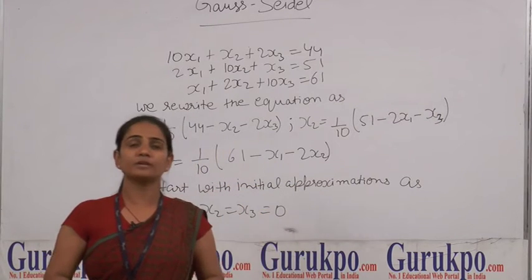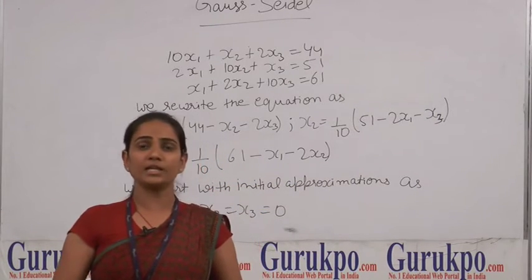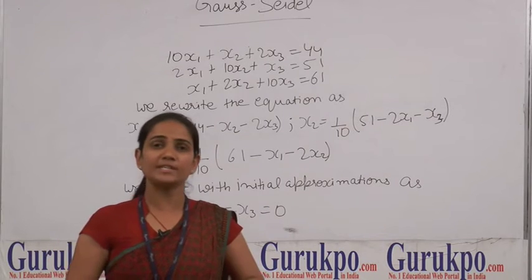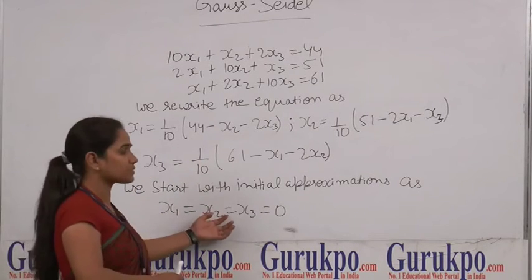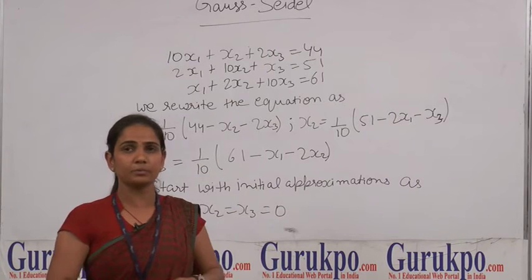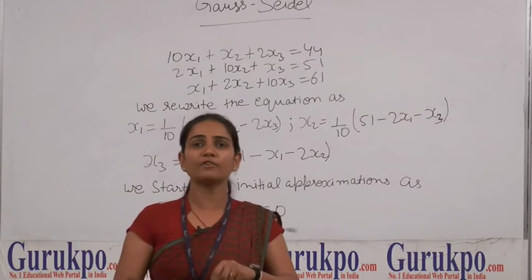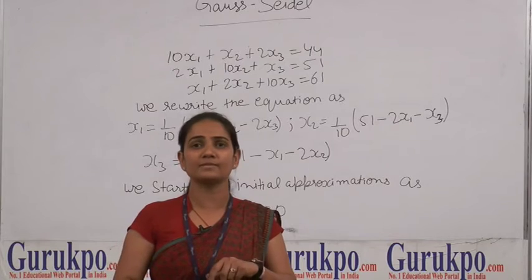Now we will start our question by taking the initial approximations. We will take initial approximations as x1 equals x2 equals x3 equals 0, so we have our initial approximations as 0.